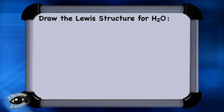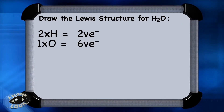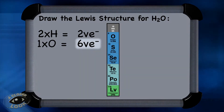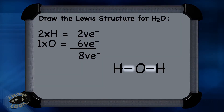Next, let's construct the Lewis structure for water. Do the electron tally first. There are 2 hydrogens, so that's 2 valence electrons. There is 1 oxygen, which is in group 6, so that's 6 valence electrons. So again there are a total of 8 valence electrons to place. Remember, hydrogen cannot be central, so arrange the atoms with oxygen central. Draw single bonds first — each one represents a shared pair, so that's 2 electrons, then 4 electrons.